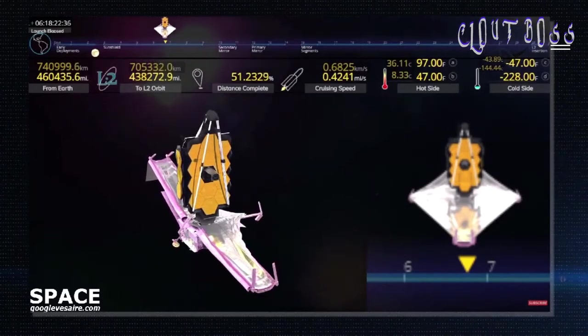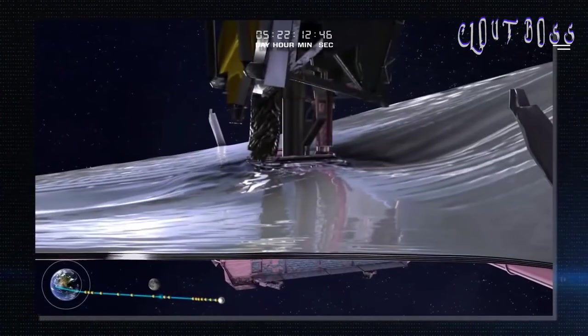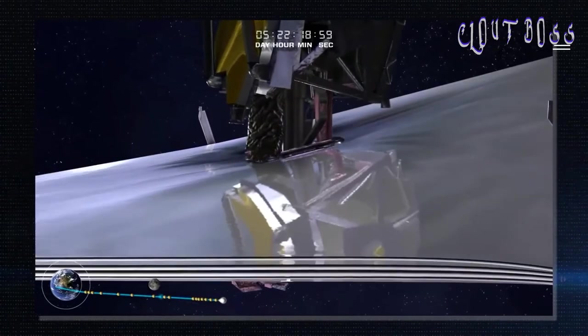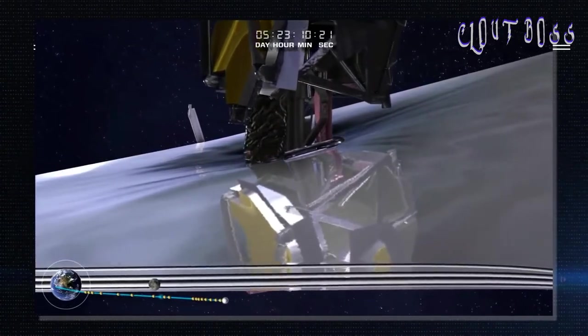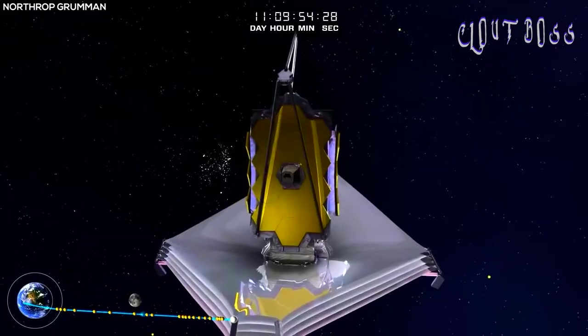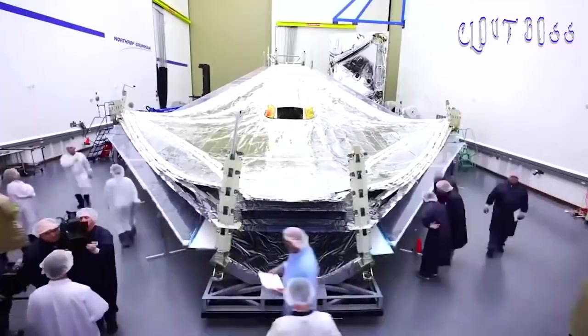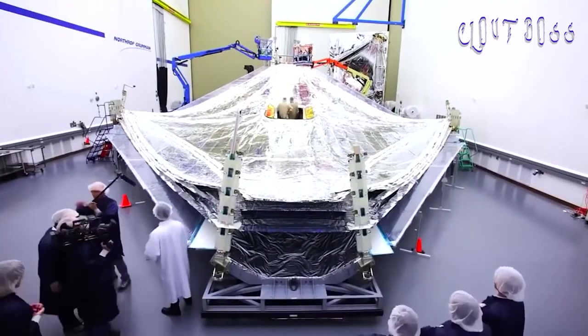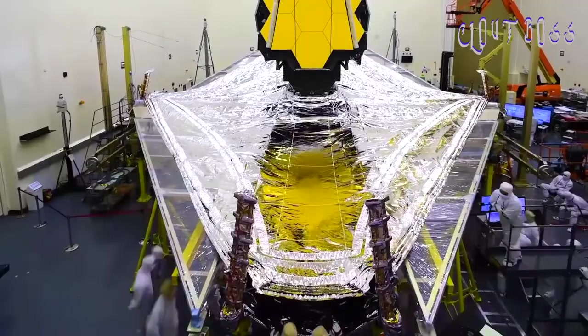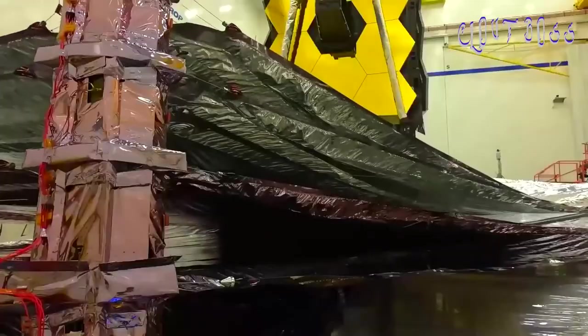JWST is not intended to be serviced in space. A crewed mission to repair or upgrade the observatory, as was done for Hubble, would not currently be possible, and according to NASA Associate Administrator Thomas Zerbichan, despite best efforts, an unmanned remote mission was found to be beyond current technology at the time JWST was designed.